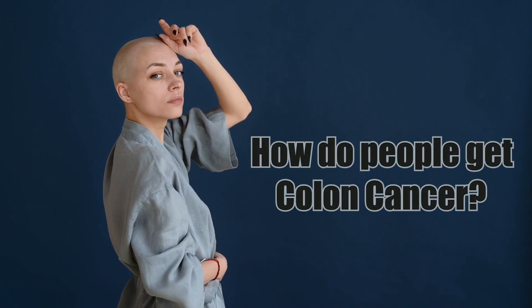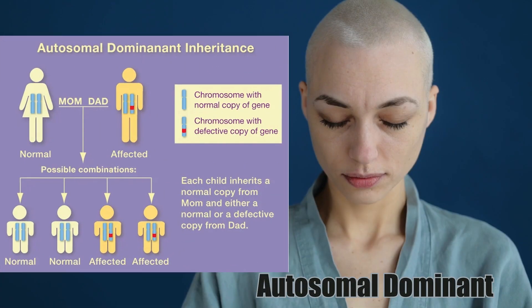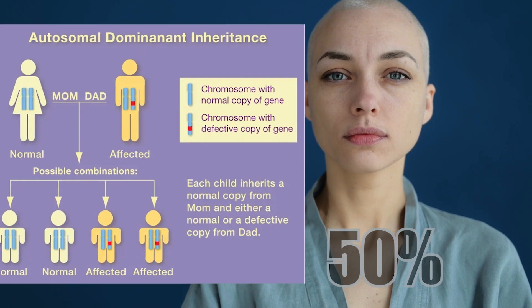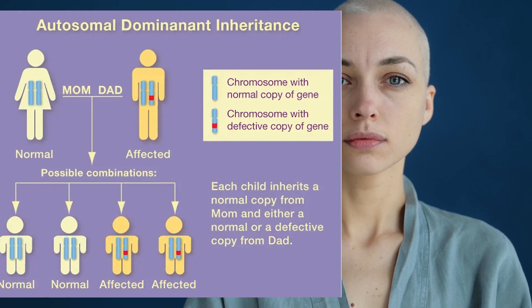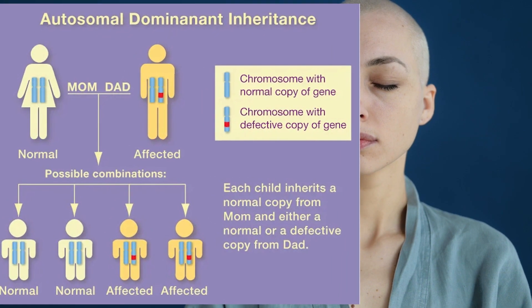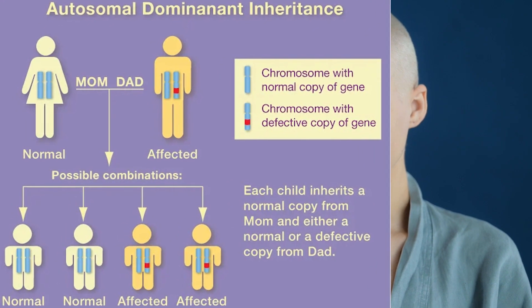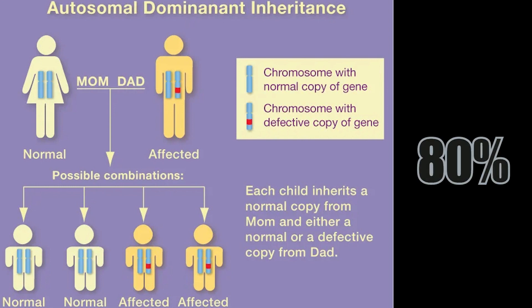This leads to another crucial question: how do people develop colon cancer? Both FAP and HNPCC follow an autosomal dominant inheritance pattern. If a parent has FAP or HNPCC, their children have a 50% chance of inheriting the mutated gene. However, inheriting a defective gene does not guarantee the development of malignant cancer. In the case of the APC gene, inheriting one faulty copy practically ensures colon cancer by age 40. Similarly, individuals inheriting one faulty gene associated with HNPCC have an 80% chance of developing colon cancer, as well as an increased risk of other cancer types.